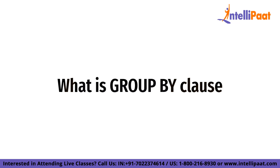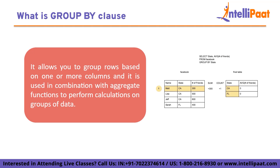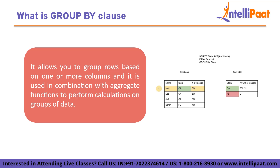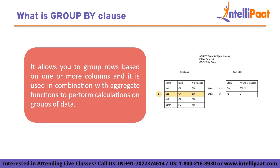Let us start with what the group by clause is. The group by clause is a clause in SQL used to group rows based on one or more columns. It allows you to divide the result set into groups, where each group represents a unique combination of values from the specified columns. When you use the group by clause, rows with the same values in the specified columns are combined into groups. It is often used in conjunction with aggregate functions such as count, sum, avg, max, and min to perform calculations on each group of data.